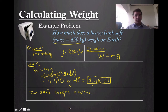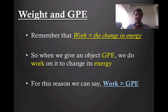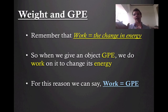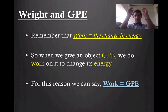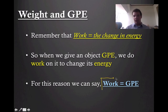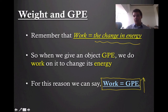So weight problems are very straightforward — really simple, mass times gravity. Once we start getting into GPE, we're going to have to take it a bit further, so follow along closely because this is a step-by-step process. We talked about this before: work is the same as the change in energy. So when we give an object GPE, we do work on it to lift it up in the air and change its energy. For that reason, what we can argue is that work is simply going to be equal to the amount of GPE that the object has, because we're changing its energy by giving it GPE and lifting it into the air.